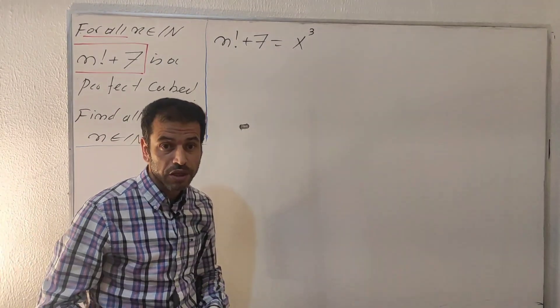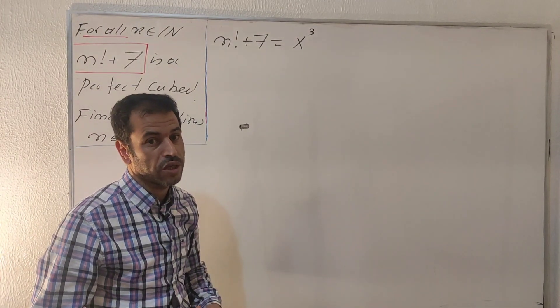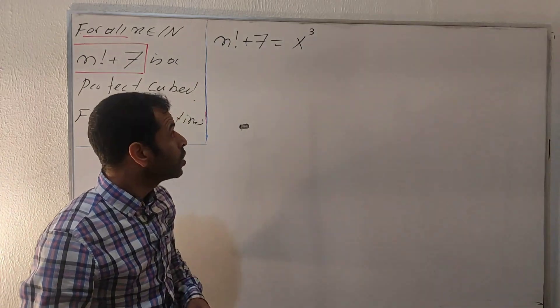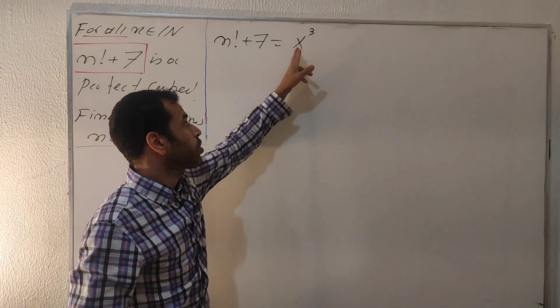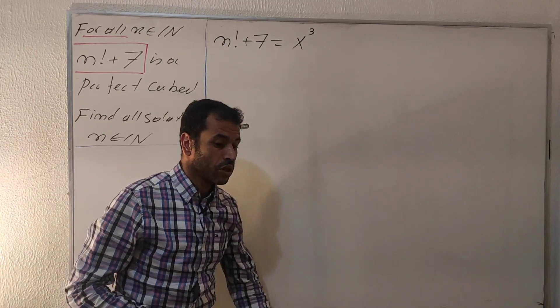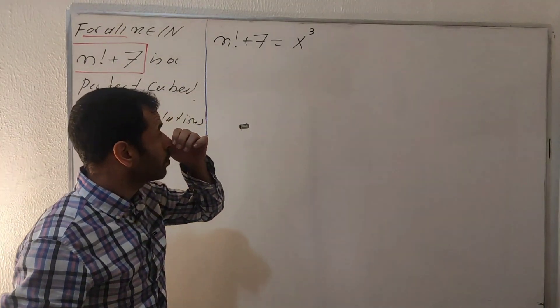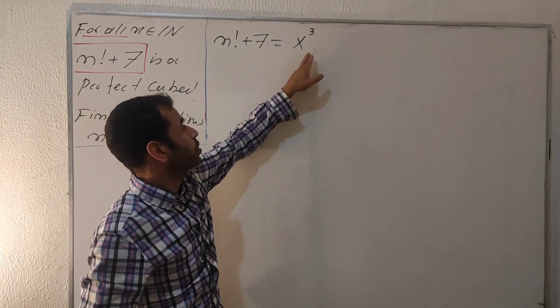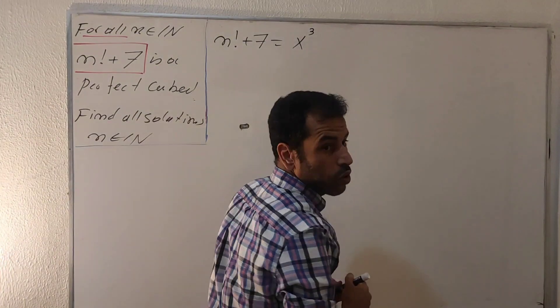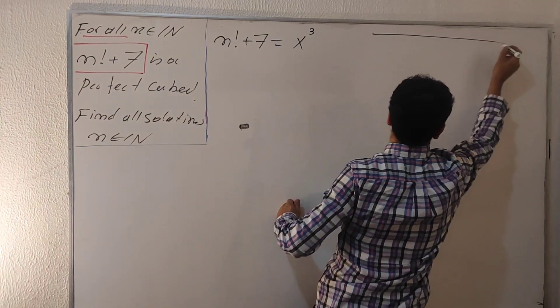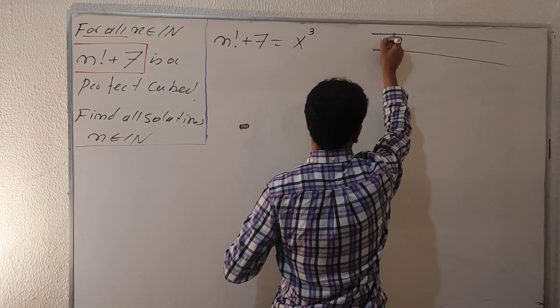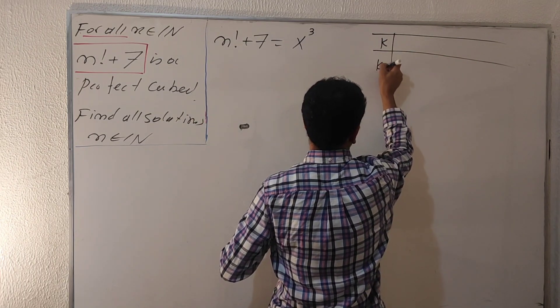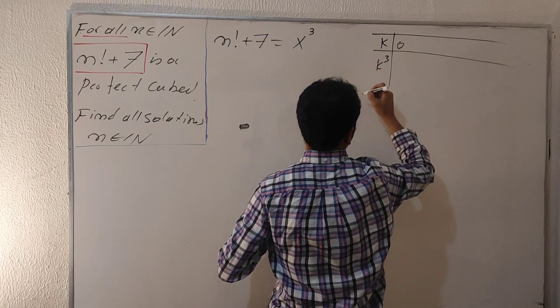If we have different reminders, the equation doesn't accept any solution. The convenient and appropriate mod here is mod 9, because mod 9 works with x cubed. Let's go through the charts first. Let's take the following values. Let's put this one k cubed.